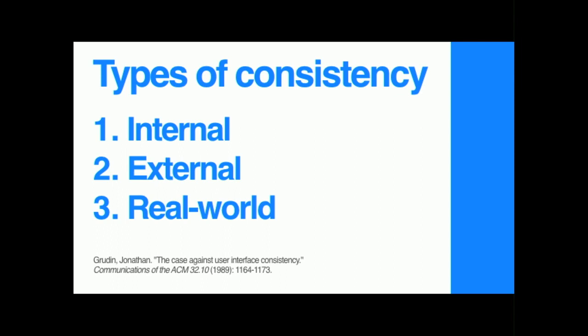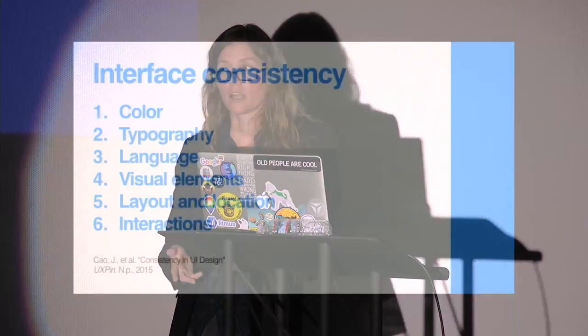Three ways of dividing things into consistency types: internal, external, and real-world consistency. In both internal and external consistency, we can look at interface consistency in the context of color, typography, language, visual elements, layout and location, and interactions.